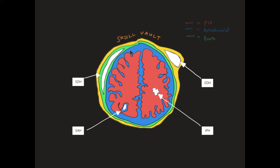Superficial to the pia, but deep to the arachnoid mater is a real space, which under normal circumstances exists in all of us, and that's called the subarachnoid space. It surrounds the brain and bathes it to help maintain a degree of neurochemical stability. It's important to note that the subarachnoid space extends into all of these various sulci that you can see here. Superficial to the arachnoid mater still is the dura mater, and superficial to that is the skull vault.